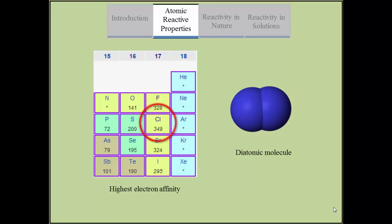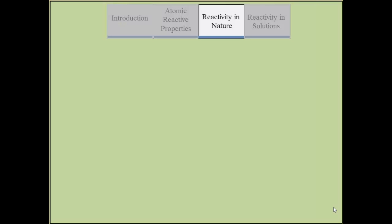Chlorine is also one of the seven elements that form diatomic molecules. It binds with almost all other elements, usually making neutral chloride salts, for example potassium chloride.